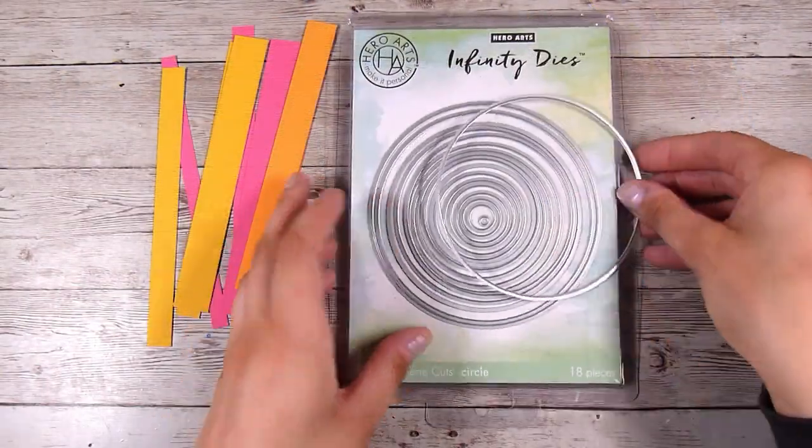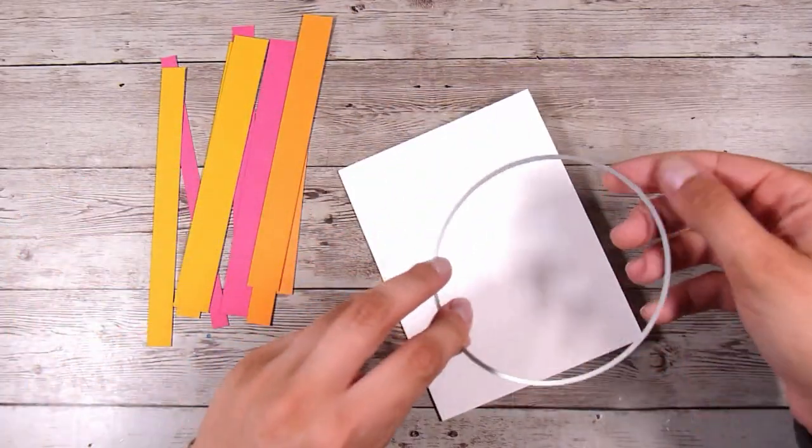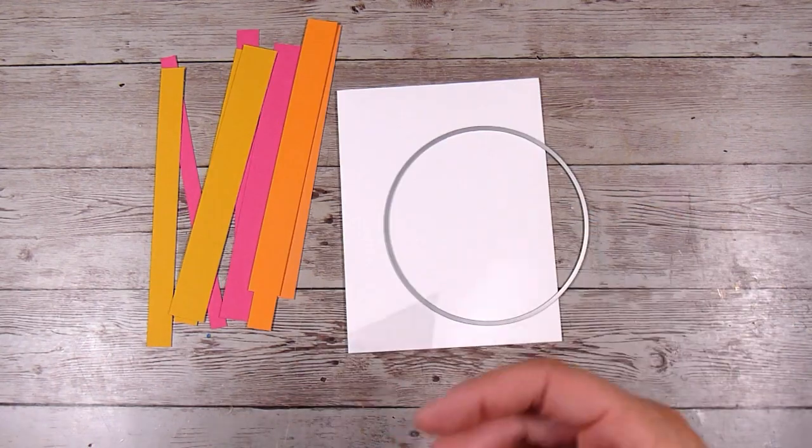I went with straight for this card. Then I have my Hero Arts Infinity circle dies. Any circle dies. You could do a square, a rectangle, a circle, a star, a heart. So many shapes would work here.